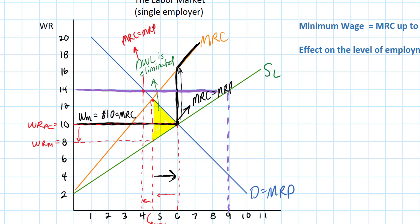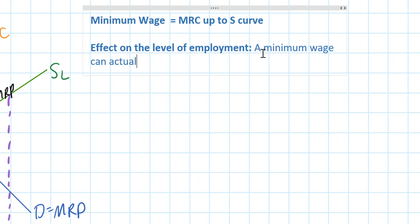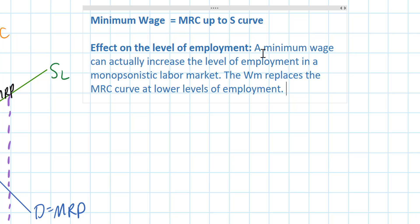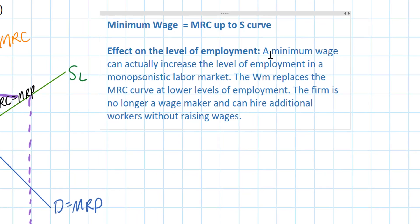Let's go over to our notes and do some analysis of the impact of a minimum wage in a monopsonistic labor market. As we showed in our analysis, a minimum wage can actually increase the level of employment in a monopsonistic labor market. The reason is, the wage minimum replaces the MRC curve at lower levels of employment. The firm is no longer a wage maker and can hire additional workers without raising wages. The monopsonist is incentivized to hire more workers following the imposition of the minimum wage, because the cost of hiring additional workers does not increase faster than the wage rate it has to pay them anymore.